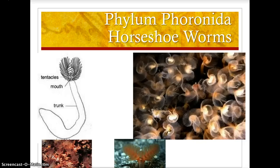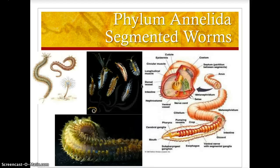Phylum Phoronida — these are the horseshoe worms, very simple organisms. They have tentacles and a mouth, a trunk, and the intestine follows through to an anus. Here you can see the feathery-like appearance of the horseshoe worms.